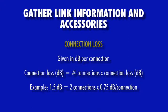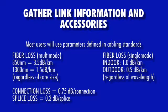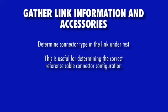Connection loss is the number of connections multiplied by the dB loss per connection. Splice loss is the number of splices multiplied by the dB loss per splice. Most users will follow the fiber, connection, and splice loss values specified in cabling standards such as the TIA 568. It is also helpful to determine the connector type used in the link, which will help determine the right reference cable configuration to use.